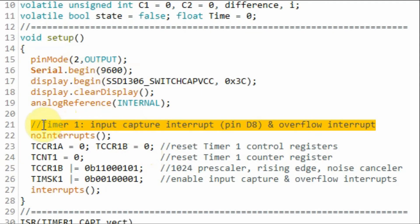Within the setup function we need to program Timer 1 for input capture interrupt and overflow interrupt. First we reset the Timer 1 control register B to have a 1024 prescaler, rising edge and noise canceler. We program Timer 1 mask register to enable input capture and overflow interrupts.